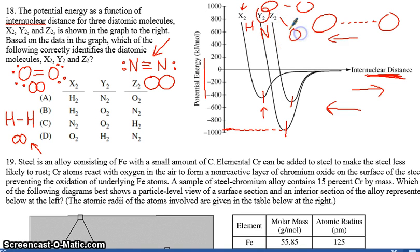So Y2 should be nitrogen, and Z2, by default, would be oxygen. Do we have one that does that? X2 would be hydrogen, Y2 would be nitrogen, and O2 looks like A for us. Hopefully that one makes sense. Read it, realize it, and be ready for these types of questions.